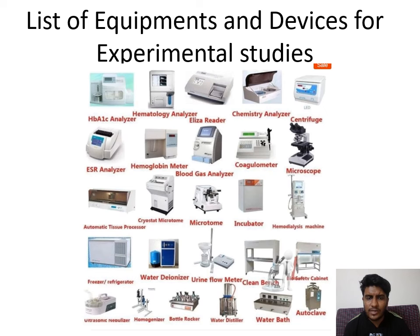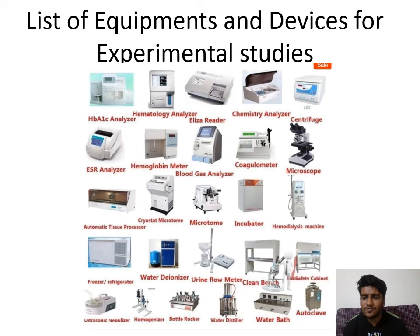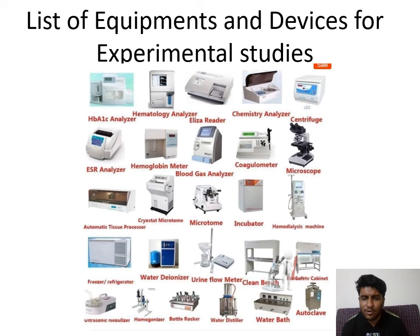Equipment and devices used include the HbA1c analyzer for glycosylated hemoglobin and blood glucose estimation; hematology analyzer for CBC, WBC, platelets, RBC; ELISA plate reader for antigen-antibody interaction; centrifuge for separating supernatant and precipitating RBC and WBC platelets; ESR — erythrocyte sedimentation rate analyzer, important for infectious diseases; hemoglobin meter; incubators for appropriate environment; and the cryostat microtome for sectioning tissues embedded in paraffin.